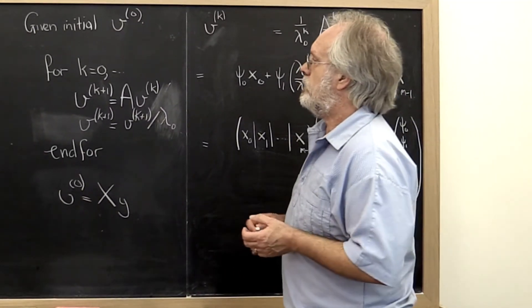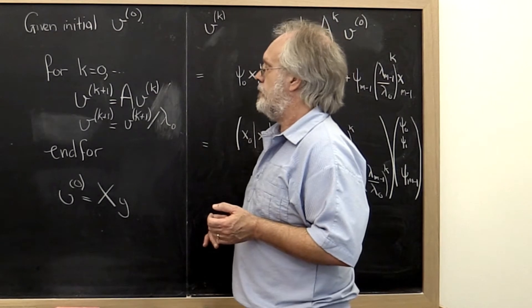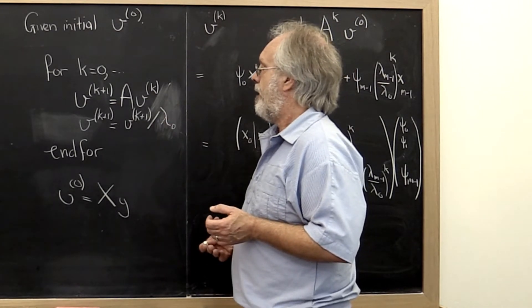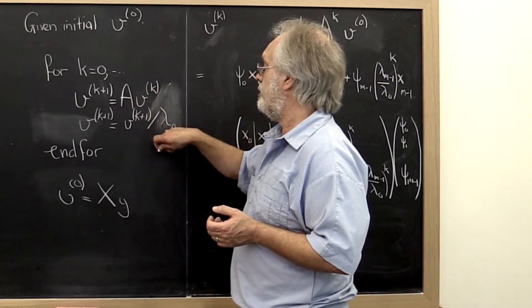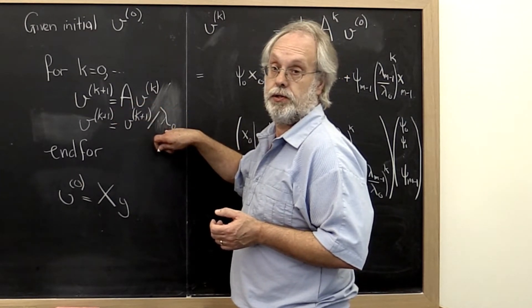So how did this method work? Well we were given an initial vector v0, some direction, and then we kept hitting that vector with matrix A and dividing by the eigenvalue.